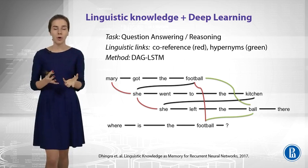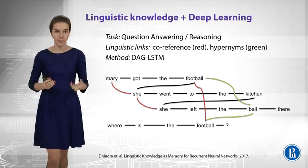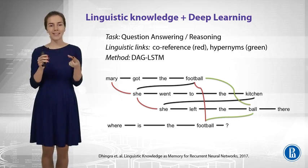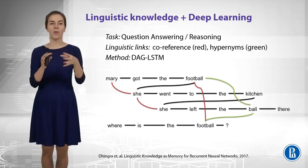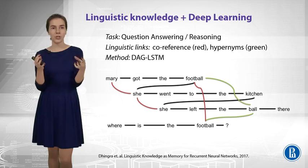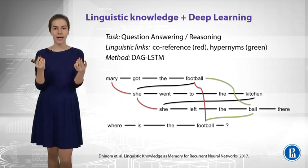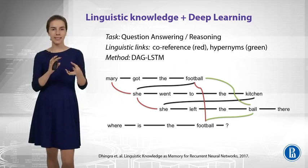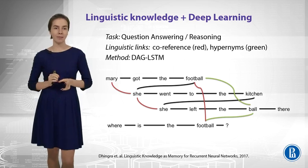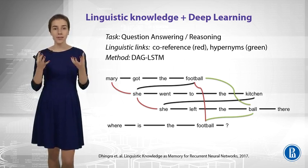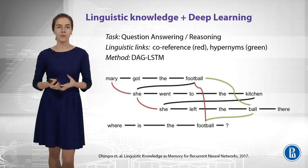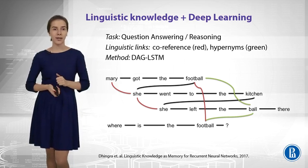The green thing is about the hyperonym relationship that I briefly mentioned — the football is a particular type of ball. So, once we know that our words have some relationships, we can add some additional edges to our data structure. After that, we can have so-called DAG-LSTM, which is dynamic acyclic graph LSTM, that will try to utilize these edges. I just want you to see that there is a way to use the linguistic knowledge to our needs here and improve the performance of some particular question-answering task, for example.